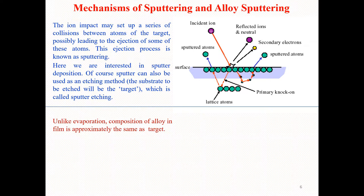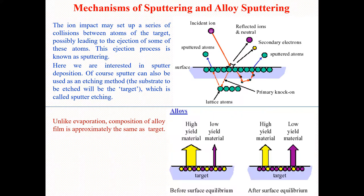Unlike evaporation, the composition of the alloys in the film is approximately the same as the target — this kind of compositional matching was not possible with evaporation techniques. As you can see in this figure, we have two mechanisms: before surface equilibrium, on one side we have high yield materials and on the other side low yield materials. After surface equilibrium, both are present in equal numbers.